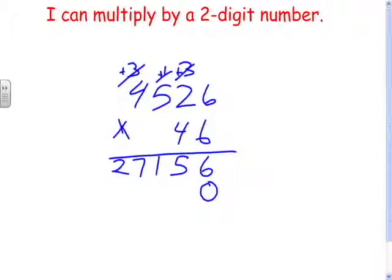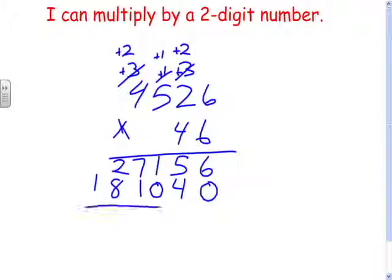Now I do everything times four. Six times four is twenty-four. Two times four is eight, plus two is ten. Five times four is twenty, plus one is twenty-one. Four times four is sixteen, plus two is eighteen.